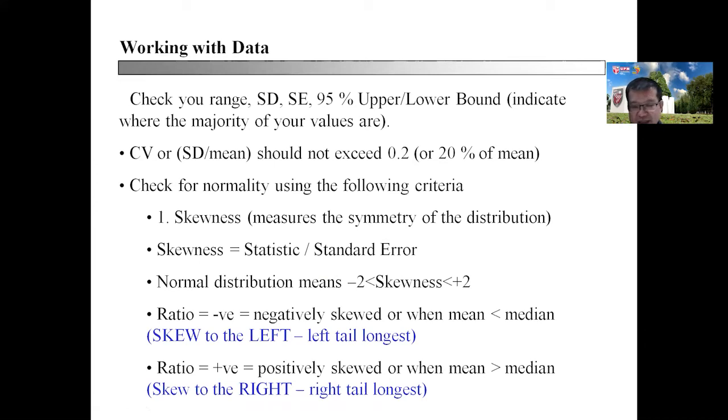The next to check will be SD, SE, and the trim mean value. One thing to note is that the CV, which is given by the value of SD over mean, should not exceed 0.2 or 20% of the mean itself. Apart from Kolmogorov-Smirnov, you can also check for normality using the following criteria: the first one being skewness and the second one being kurtosis.